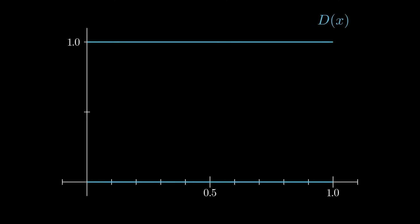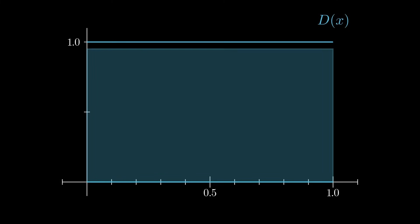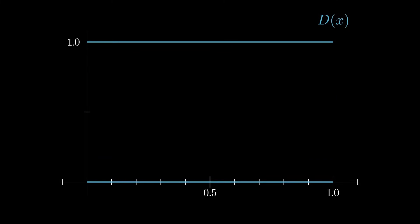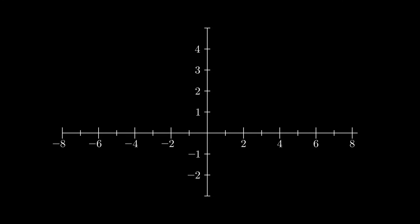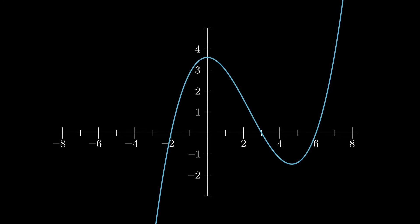If we try to integrate this function by approximating it from above and from below, we see that the upper approximation is 1 while the lower approximation is always 0. This is the Dirichlet function, and it's not Riemann integrable. To handle this fault of the Riemann integral, we may take a different approach at integration.